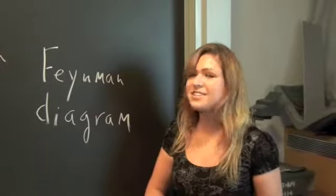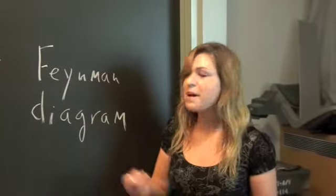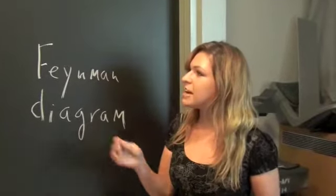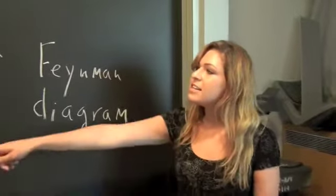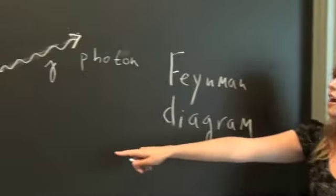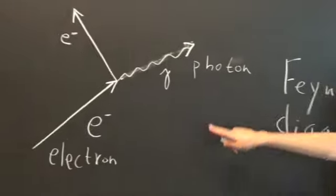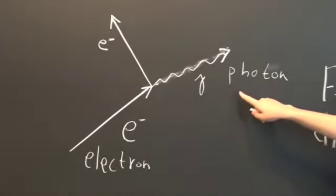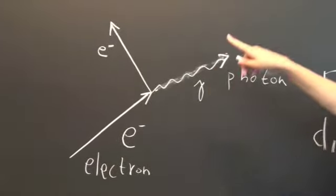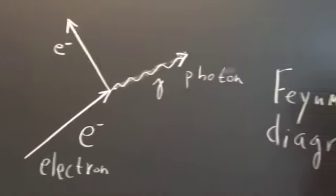All particle interactions can be modeled by Feynman diagrams. Here is a Feynman diagram of an electron emitting a photon and continuing on its merry way.